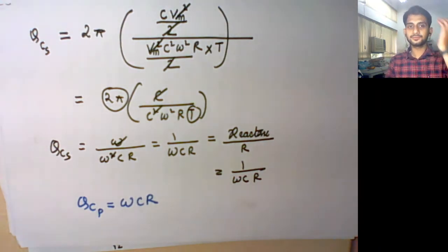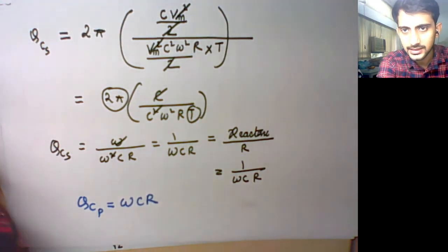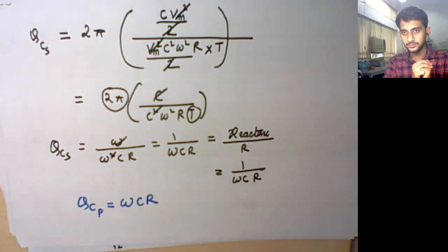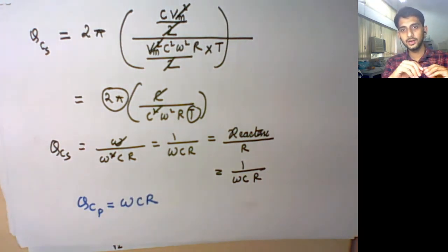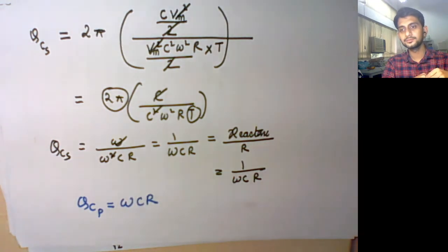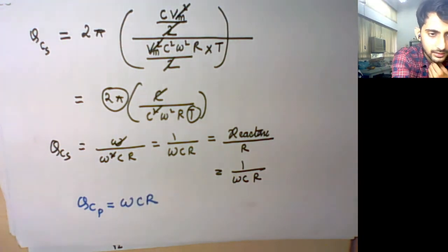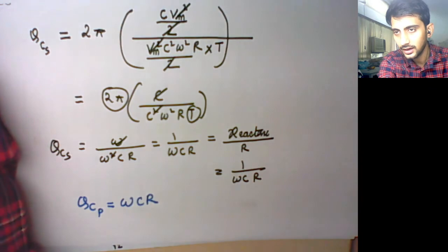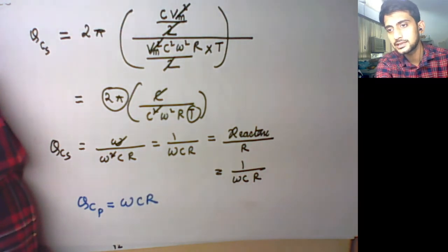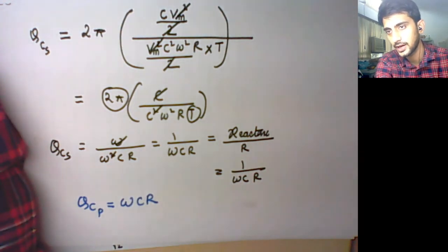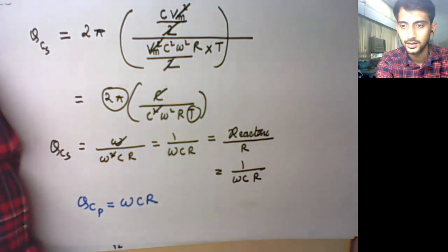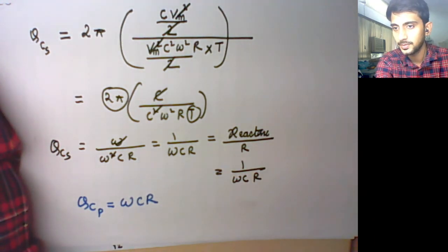So up to here, does anyone have any doubt or query about the quality factors of RL and RC circuits? If not, I will stop the recording of this section, and we will take up a few examples related to the analysis of resonance that we have covered so far.